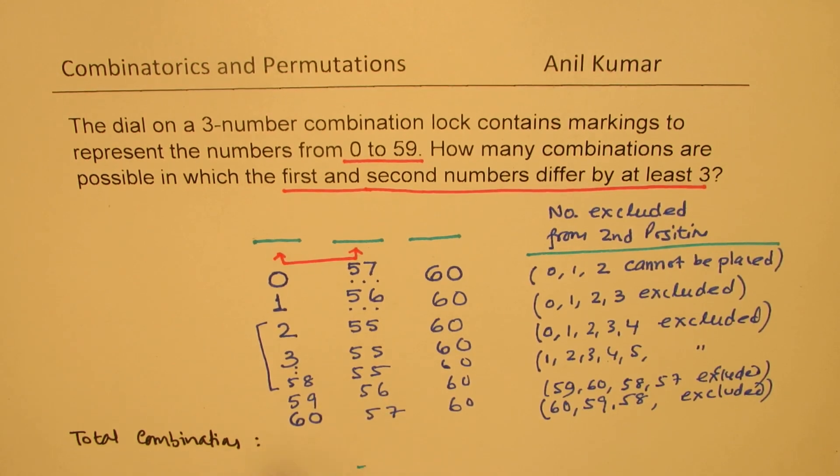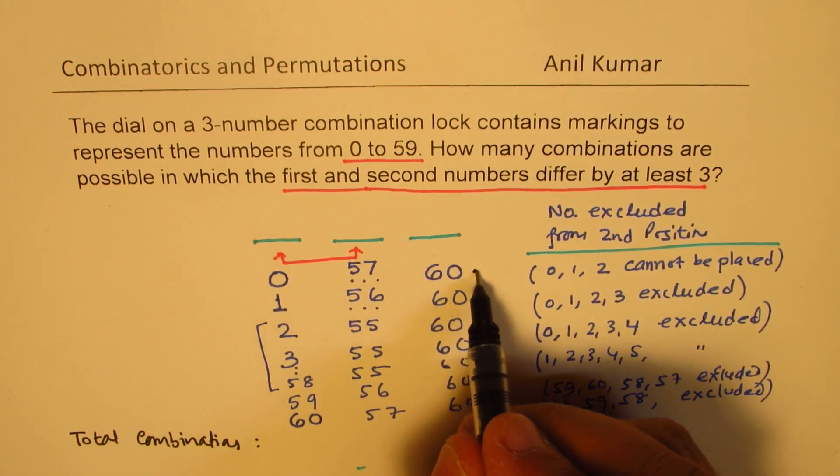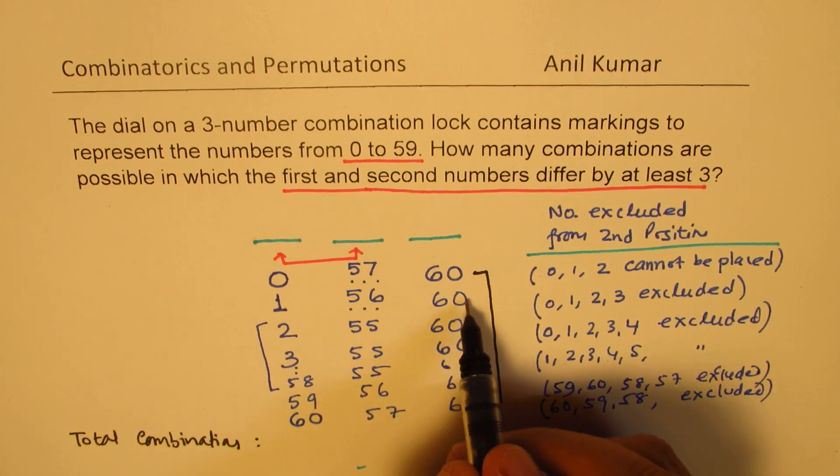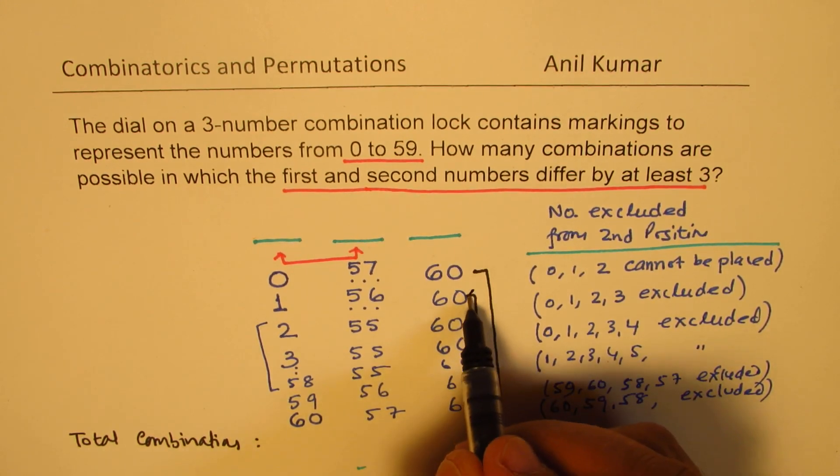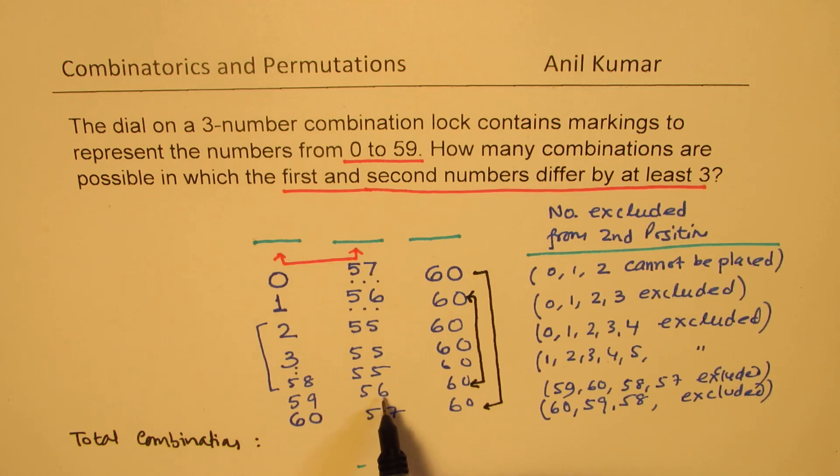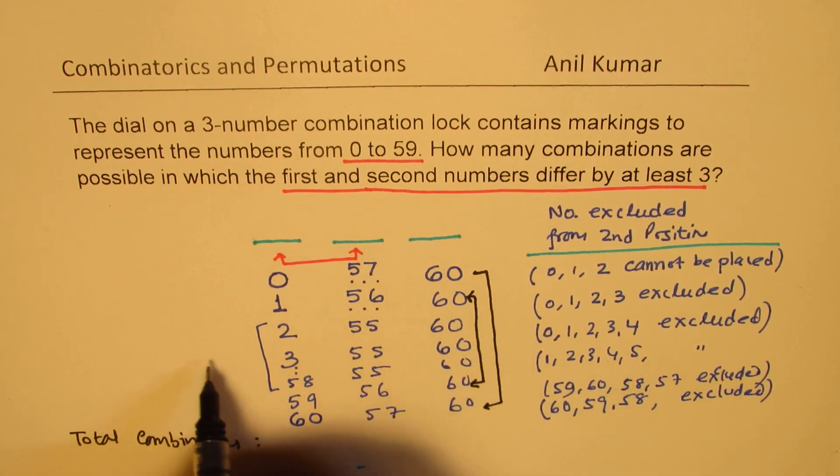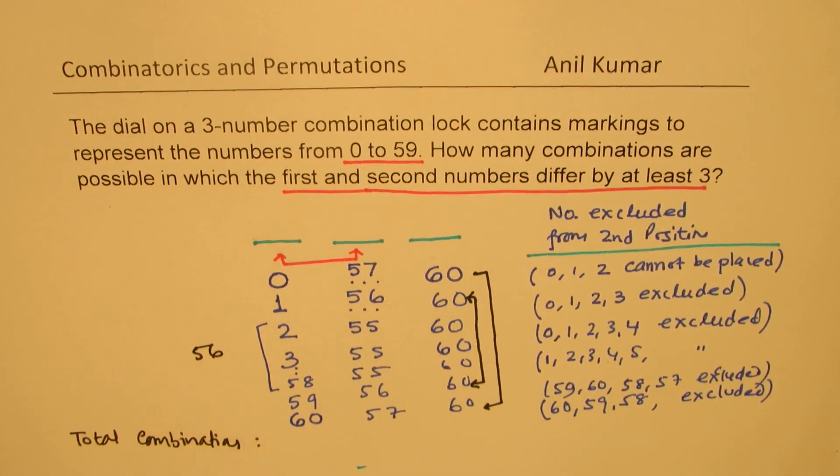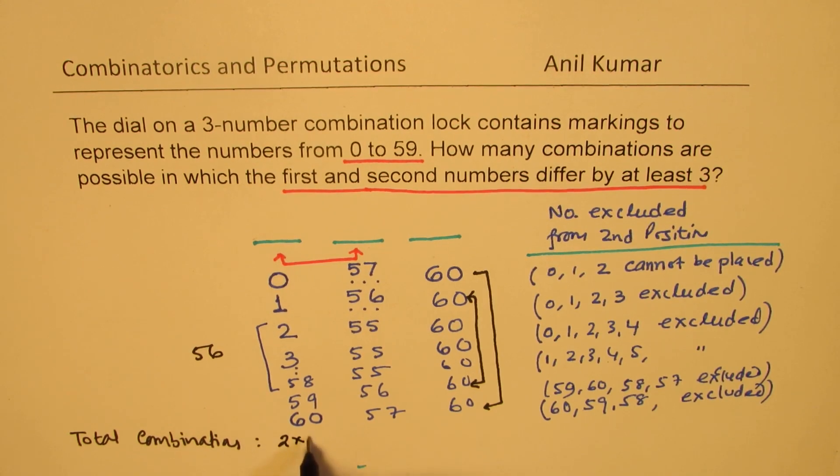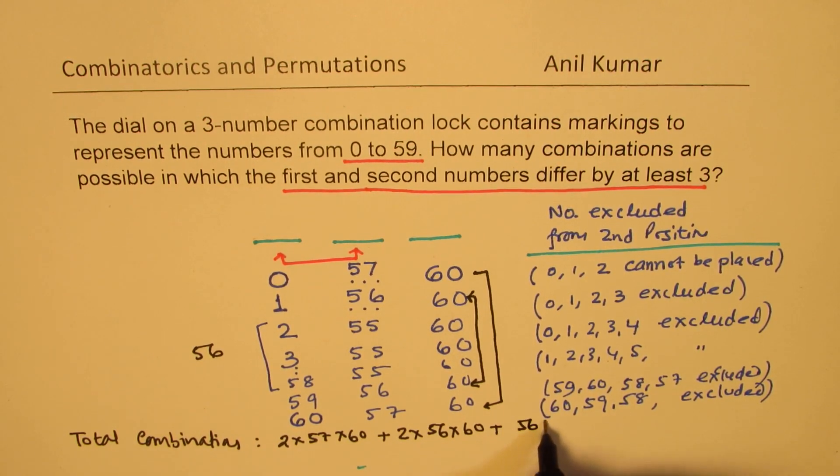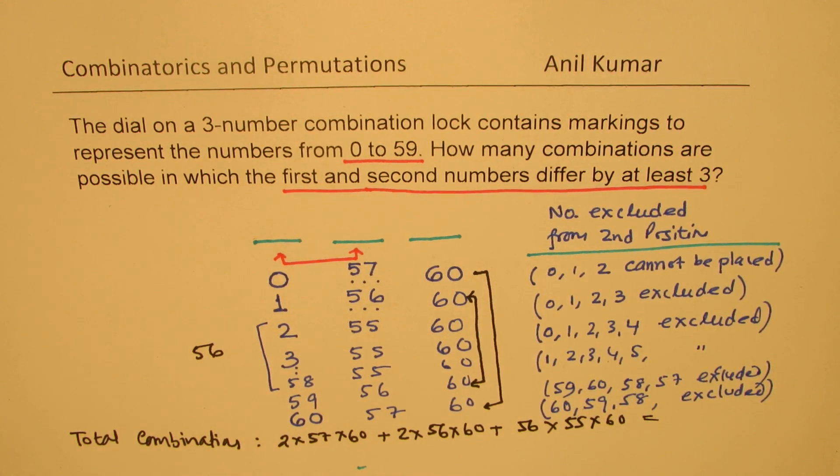We have to multiply all these to get total number of combinations. So what we get here is there are two combinations which are with 57 and 60, and there are two combinations which are with 56 and 60. And then, how many are left? 1, 2, 3, 4 are excluded out to 60, then we have 56 combinations which this group. So you could write that it is 2 times 57 times 60 plus 2 times 56 times 60 plus 56 times 55 times 60. That should give you the final answer.